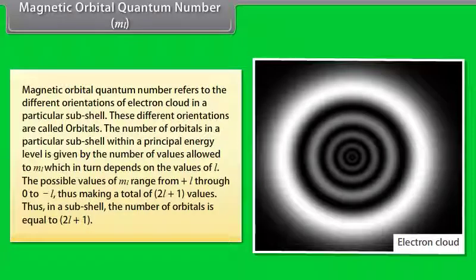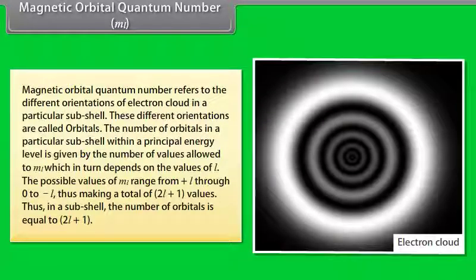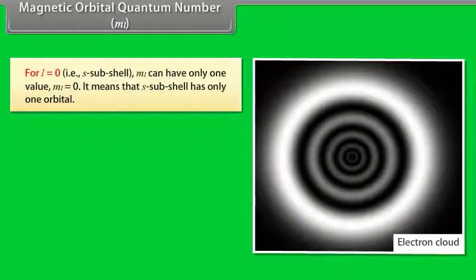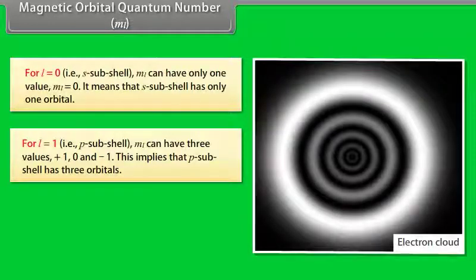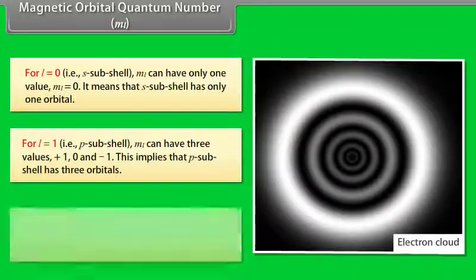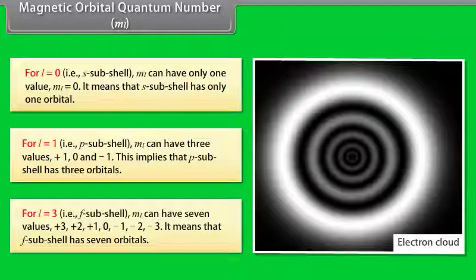The magnetic orbital quantum number, ml, refers to the different orientations of the electron cloud in a particular subshell; these different orientations are called orbitals. The number of orbitals in a subshell is given by the number of values allowed to ml, which depends on l. The possible values of ml range from +l through 0 to −l, giving a total of 2l+1 values. For l=0, ml can only be 0, so the s subshell has only one orbital. For l=1, ml can be +1, 0, and −1, so the p subshell has three orbitals. For l=3, ml can have seven values (+3, +2, +1, 0, −1, −2, −3), so the f subshell has seven orbitals.